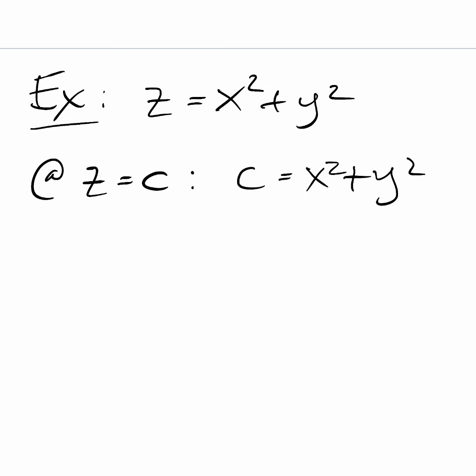Now at any particular height say at z equals c some constant then what we really have is c equals x squared plus y squared and this is a circle centered at the origin of radius what root c. So as you change z values and you go from low heights so small values of c up to big values of c you just get circles as far as x and y are concerned.